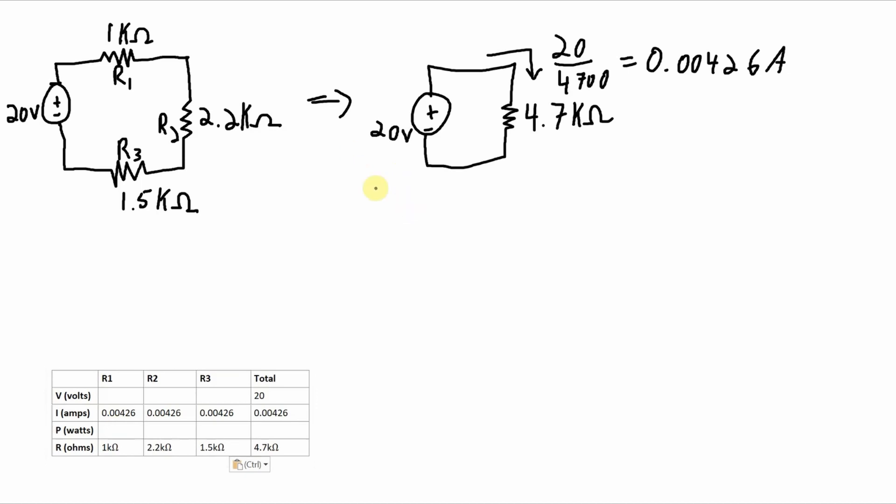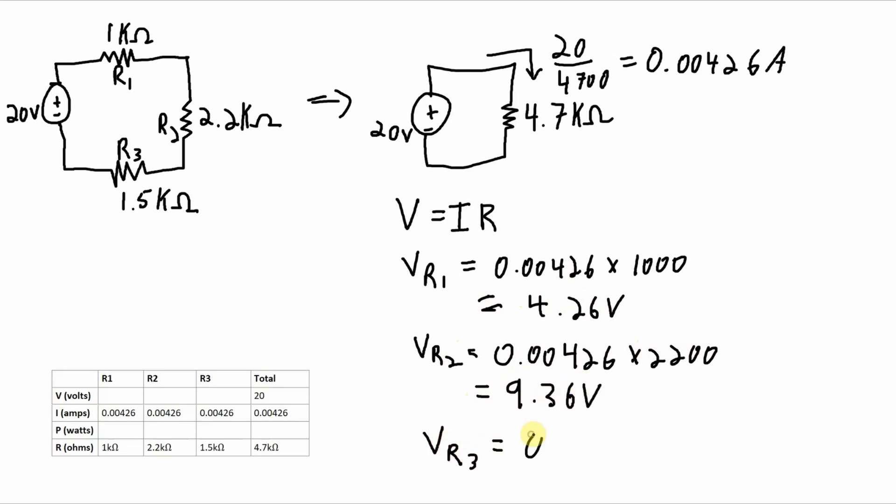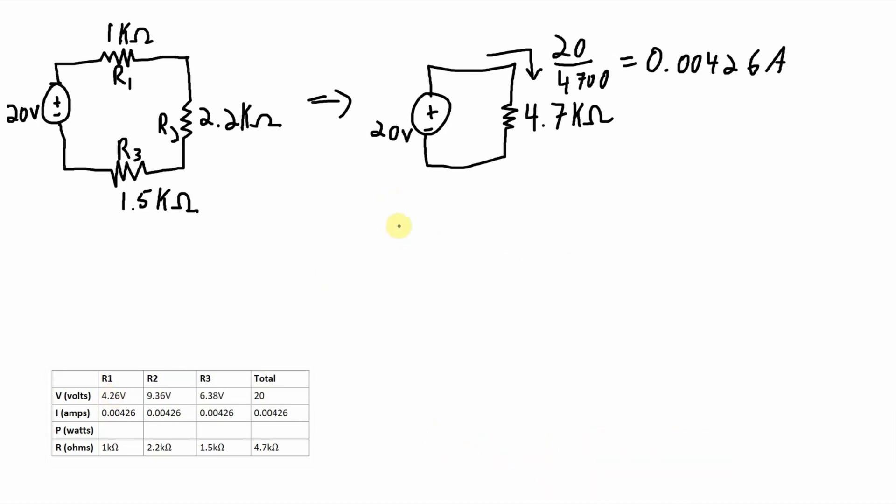To calculate the voltage across each one of those resistors, it will simply be that current that we just calculated times the resistance. And to calculate the power dissipated by each one of those resistors, we can use the simple equation of power equals voltage times current, because we know the voltage, current, and resistance of all of them.